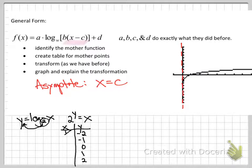2 to the negative 2 is 1 fourth. This should look familiar. Another thing you could have done is you could have just taken your 2 to the x equals y and swapped your x and y values. So the table should look familiar.